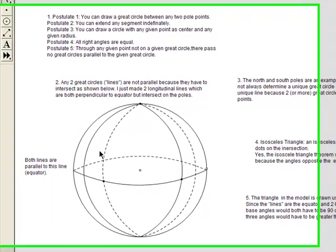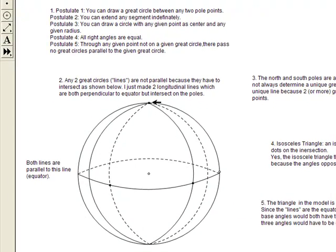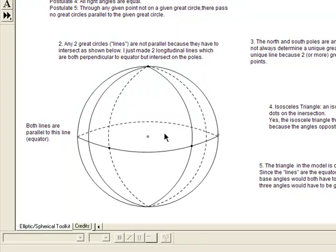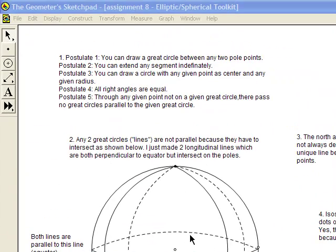Here's an example of a triangle in elliptical geometry — you can see it right in front here. This triangle has an angle sum greater than 180 degrees, and I will show why. These longitudinal lines intersect the equator, and since these are all great circles, they have to intersect at 90 degree angles. So this angle is 90 degrees and this angle is 90 degrees — we already have 180 degrees — plus this third angle will make this isosceles triangle greater than 180 degrees. That is true of all triangles in elliptical geometry.